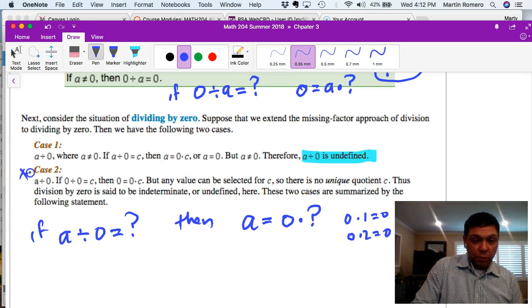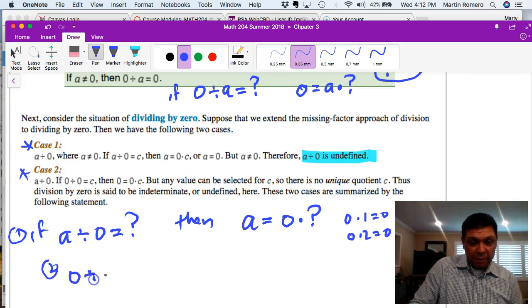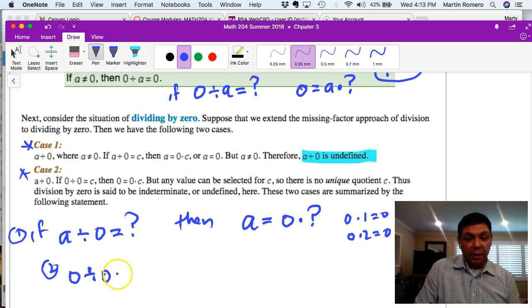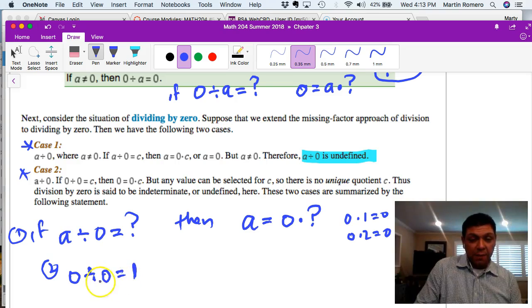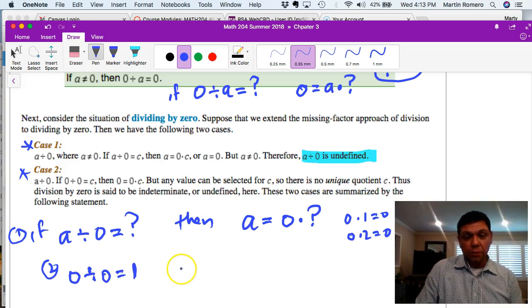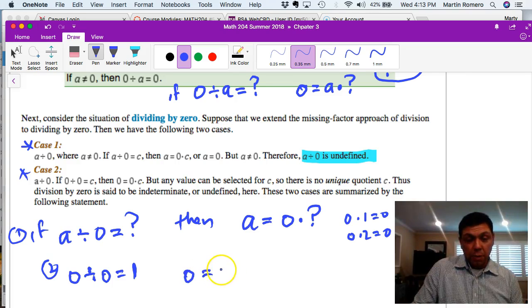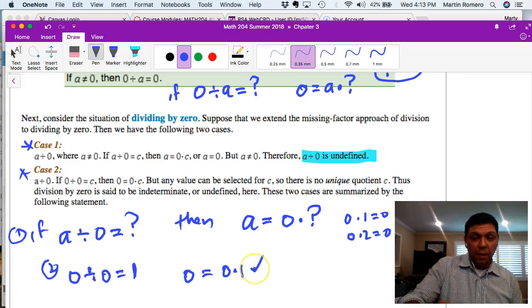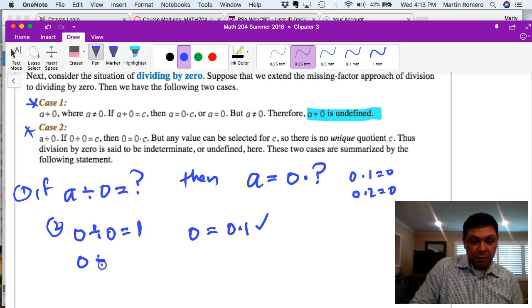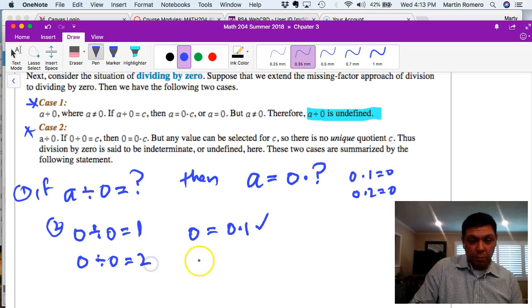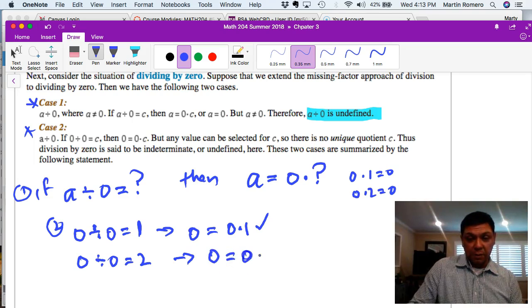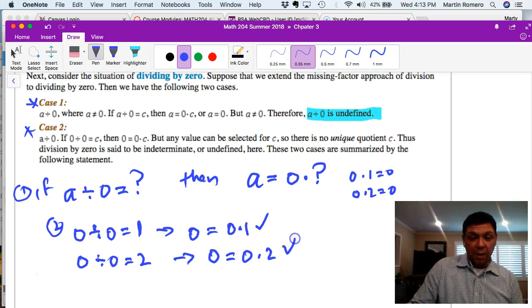And then this case two: how about zero divided by zero? A lot of people think the answer should be equal to one. Now if that's true, then we know that zero is equal to zero times one. You say oh yeah that does work, it equals zero. But then actually this would work for any number. Take a look: zero divided by zero is equal to two, then you would say zero is equal to zero times two. And so that is true.